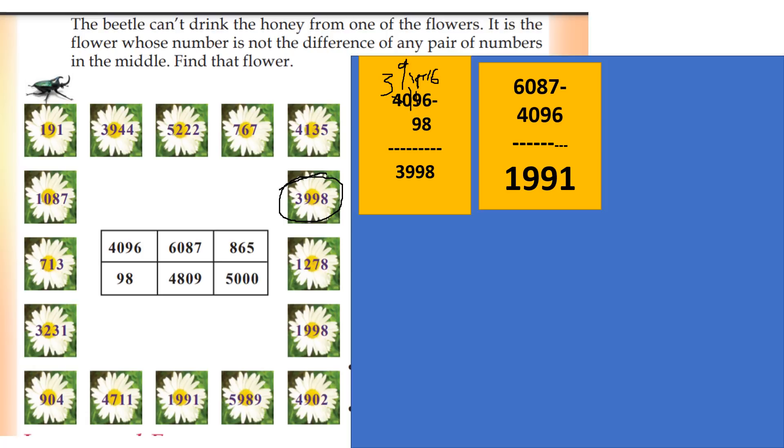Next, 6087 minus 4096. We will subtract all the numbers. 6 minus 4, that is 5 minus 4 is 1. This gives us 1991.